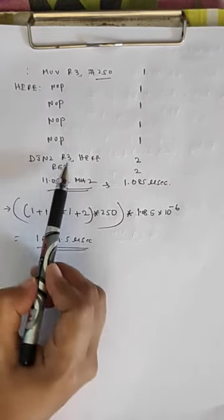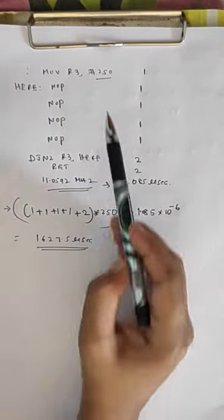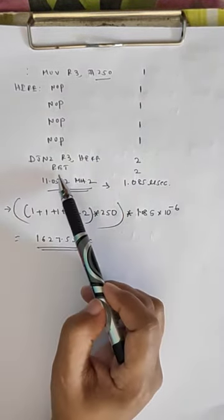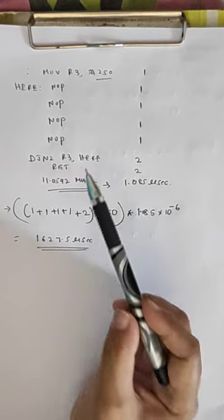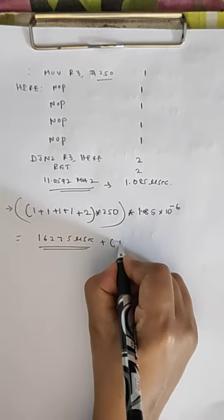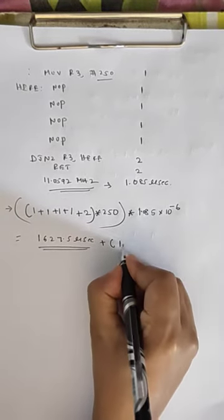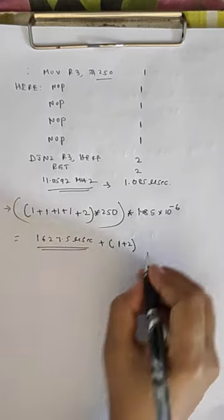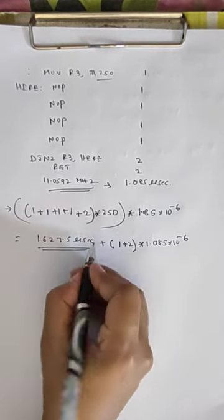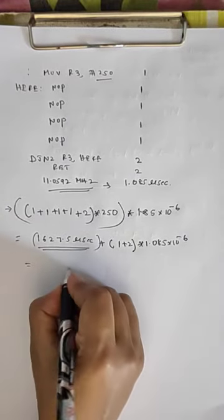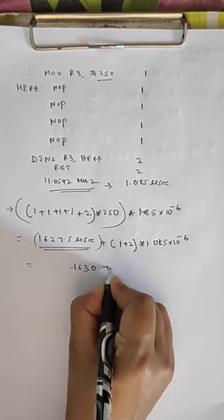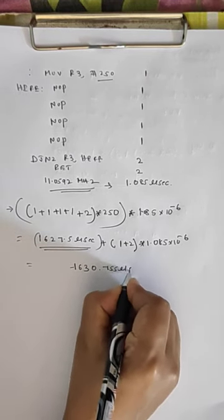Note that we have not yet considered the instructions outside the loop. The instructions outside the loop are MOV R3, #250 which takes one machine cycle, and the RETURN instruction which takes two machine cycles. Multiplying by 1.085 microseconds gives 3.255 microseconds additional time, for a total of 1630.755 microseconds.